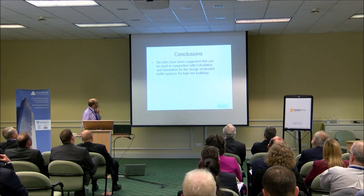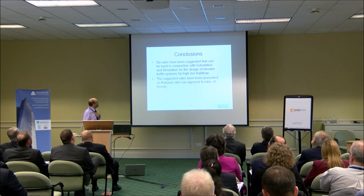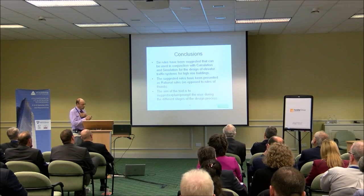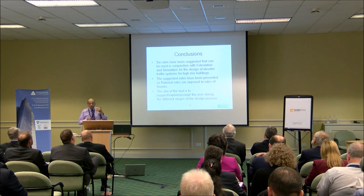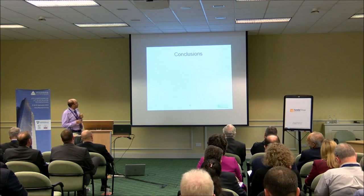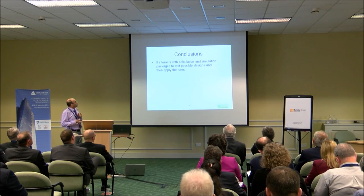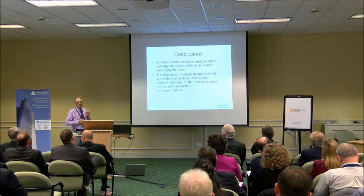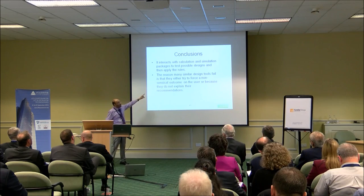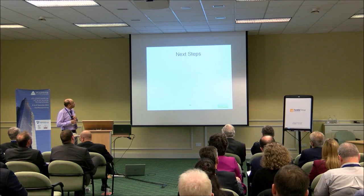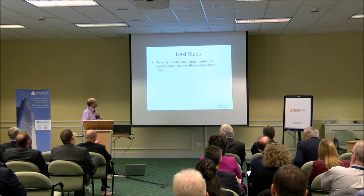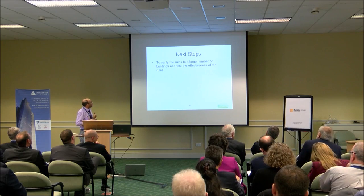To conclude, I've suggested six rational rules. We aim to suggest, explain, and prompt rather than force an outcome. There's interaction with calculation and simulation, then we apply the rules. The reason systems sometimes fail is that they try to force an outcome rather than interact and cooperate with the user. Next steps: we're taking a larger number of buildings and testing the rules with a larger group of experts.